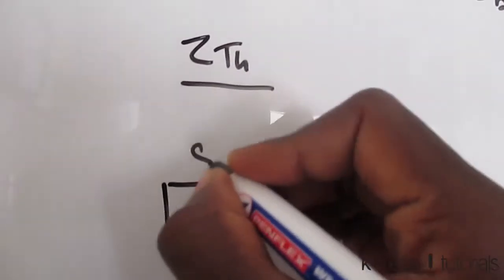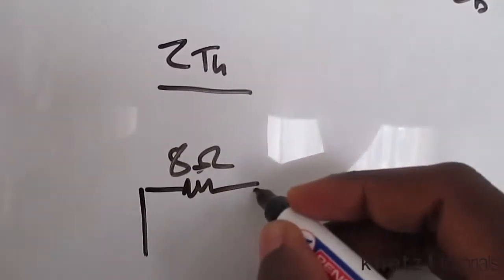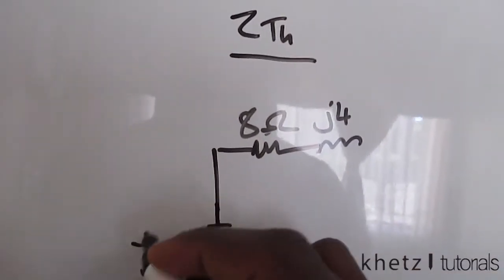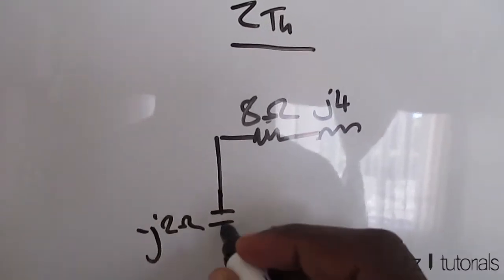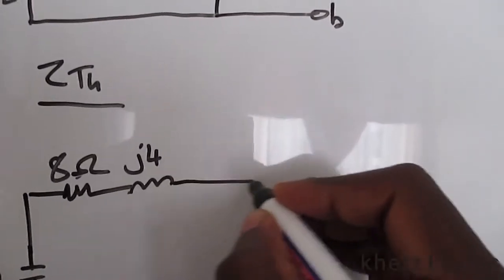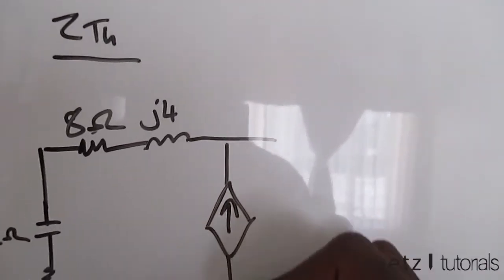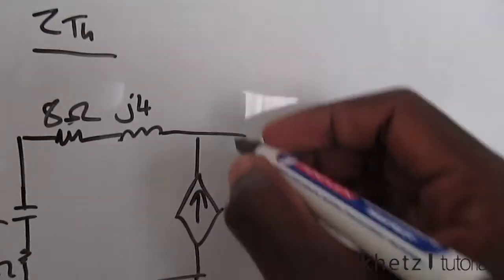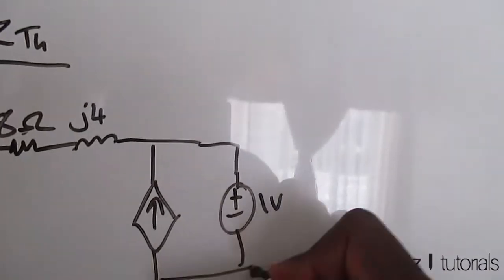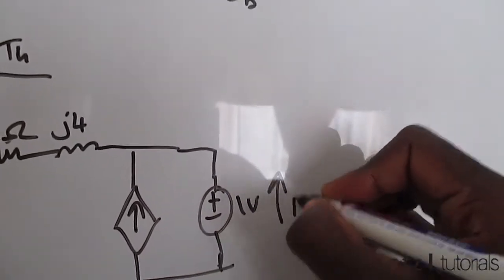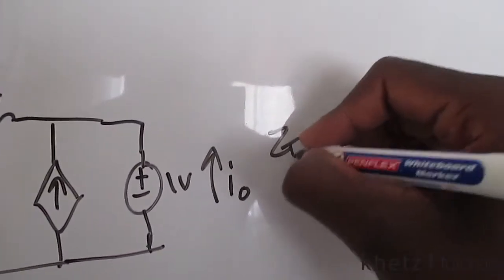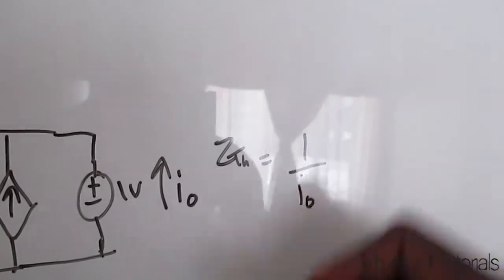In the resulting circuit you have 8 ohms, j4, negative j2 ohms, and 4 ohms. On this side you have the dependent source. I'll add a test voltage source of 1 volt and assign a current IO going upward. In the end, ZTH will be 1 divided by IO.